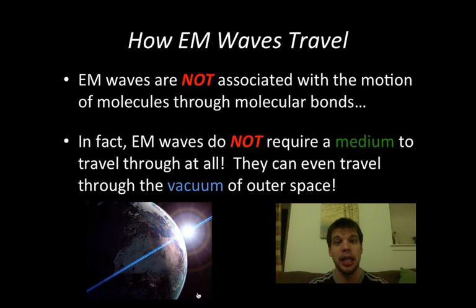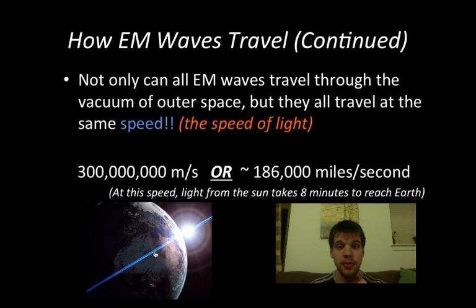They can even travel through the vacuum of outer space. The vacuum just means there's nothing there, not even air particles. There's no matter at all. Electromagnetic waves are able to travel through that. And thank goodness, because light is an electromagnetic wave. It comes from the sun and reaches the earth. We need that to survive. Electromagnetic waves simply can travel through a vacuum. They don't require particles to move through.